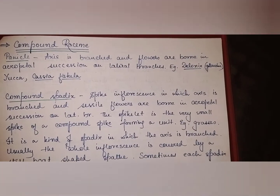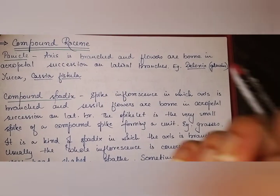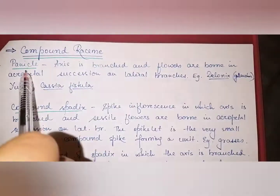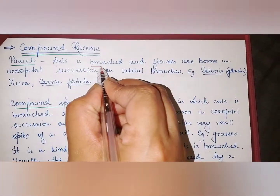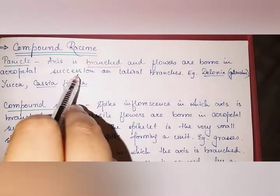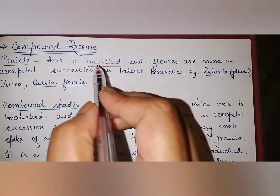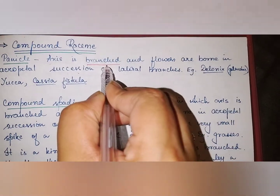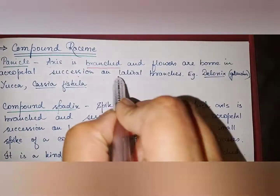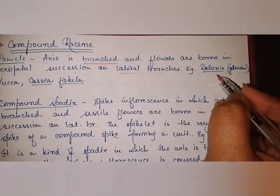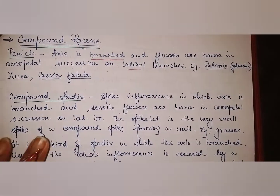Now we come to compound racimose. First is panicle: the axis is branched and flowers are born in acropetal succession on lateral branches. The key difference from simple raceme is that here the axis is branched. It is found in Gulmohar (Delonix), Cassia fistula, and Yucca.